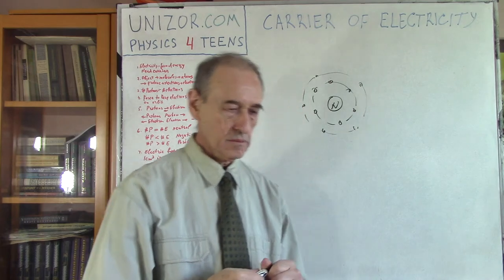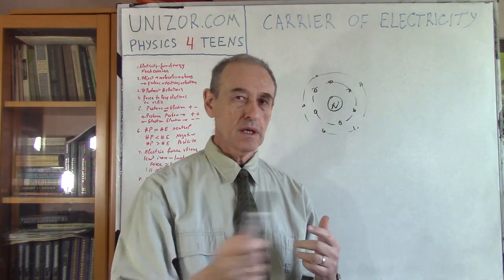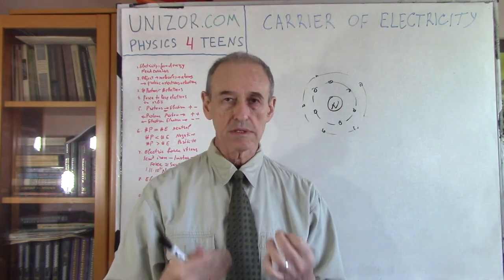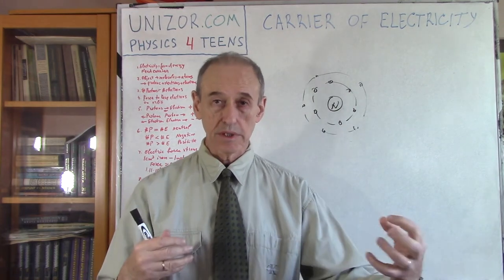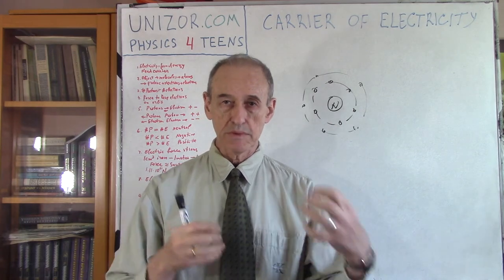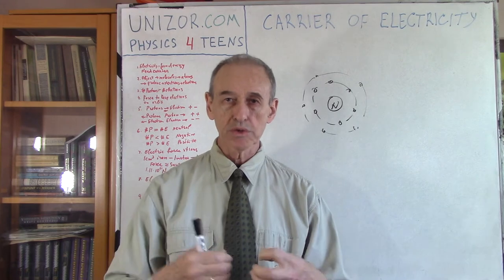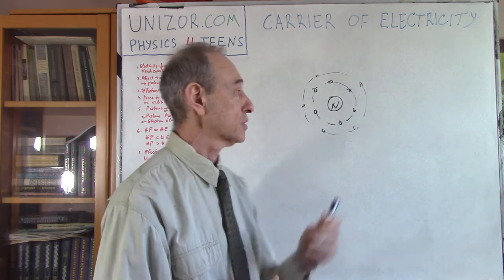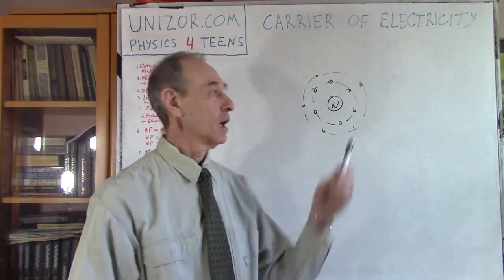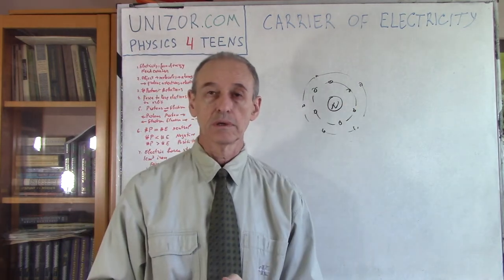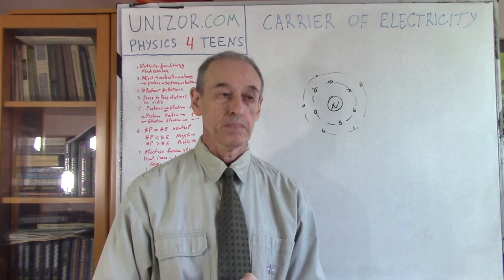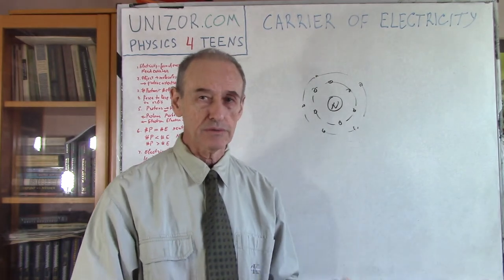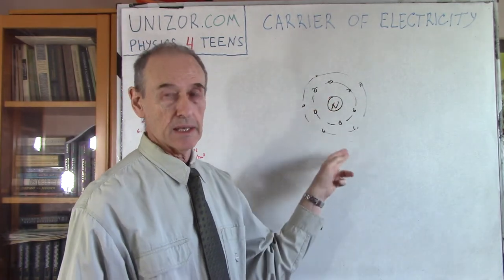Earth is rotating around the Sun. What holds Earth on its orbit? Gravity — the gravitational force between the Sun and Earth holds the Earth on its orbit. Similarly, what holds electrons on their orbit around the nucleus? There must be some force, and this is the electric force which exists between the nucleus and the electrons.